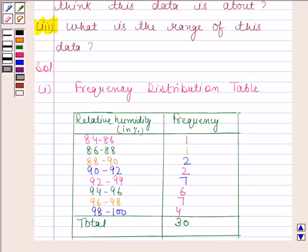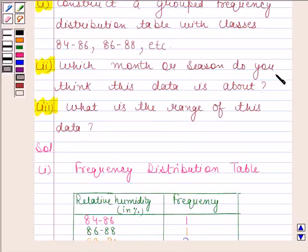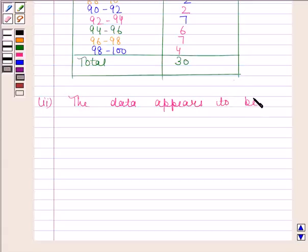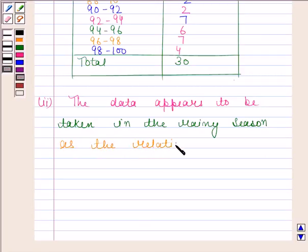Let's now move on to the second part. Second part says, which month or season do you think this data is about? The data appears to be taken in the rainy season as the relative humidity is high. This completes the second part.